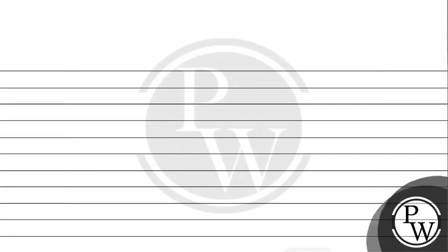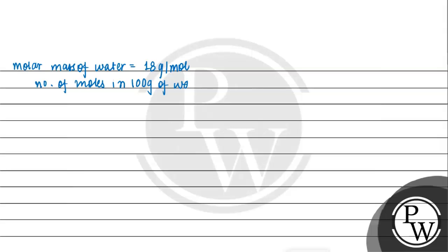We will now calculate the number of moles in water. The molar mass of water is 18 grams per mole. The number of moles in 100 grams of water is 100 divided by 18, which equals 5.56 moles.